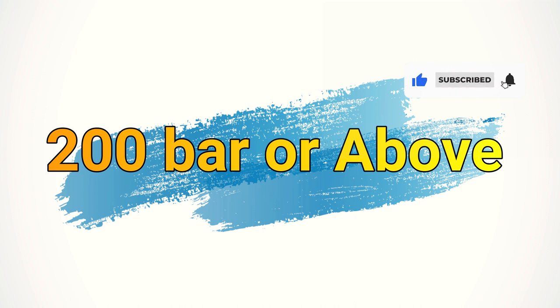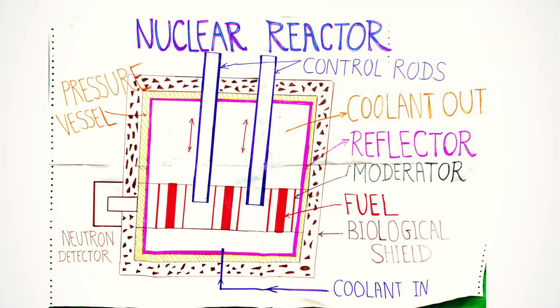The holes at the top of the vessel are provided to insert the control rods. The reactor core or fuel and moderator assembly is generally placed at the bottom of the vessel.